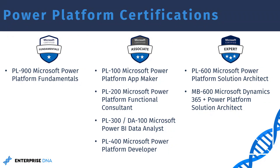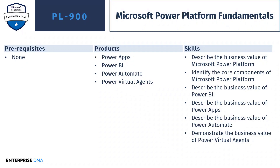Now that we have a basic understanding of the roadmap for the Power Platform certifications, let's go through them one by one. I'll go through them fairly quickly, but feel free to pause the video as there'll be a lot of information on the screen. Let's start off with the Microsoft Power Platform Fundamentals certification, which is PL 900. In this certification, you look at all four Power Platform products, but as you can see on the skills section of the slide, you only look at the business values, core components, and use cases of these applications. So you're not really designing any applications, workflows, or reports, but instead defining the advantages, disadvantages, and what they can and can't do for a basic understanding of the Power Platform.